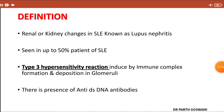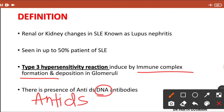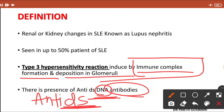It's a type 3 hypersensitivity reaction. The pathogenesis involves immune complex formation — the antibody forms against nuclear antigen, specifically against double-stranded DNA. This antibody binds to the nuclear antigen, forming an immune complex that gets deposited in the glomerulus, inducing a type 3 hypersensitivity reaction. The complement system and leukocytes get activated, leading to glomerular injury.